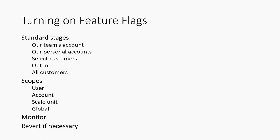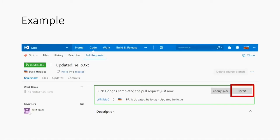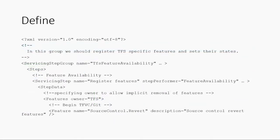You want to think about: when I turn this feature on, what are the important metrics I should look at to know if it's truly healthy — not just that nothing bad happened. And of course, we can revert it. Let's take a look at a quick example. We added a couple of buttons — cherry pick and revert — in the pull request UI about a year ago, and we did these under feature flags. It makes for a nice example of how this works.